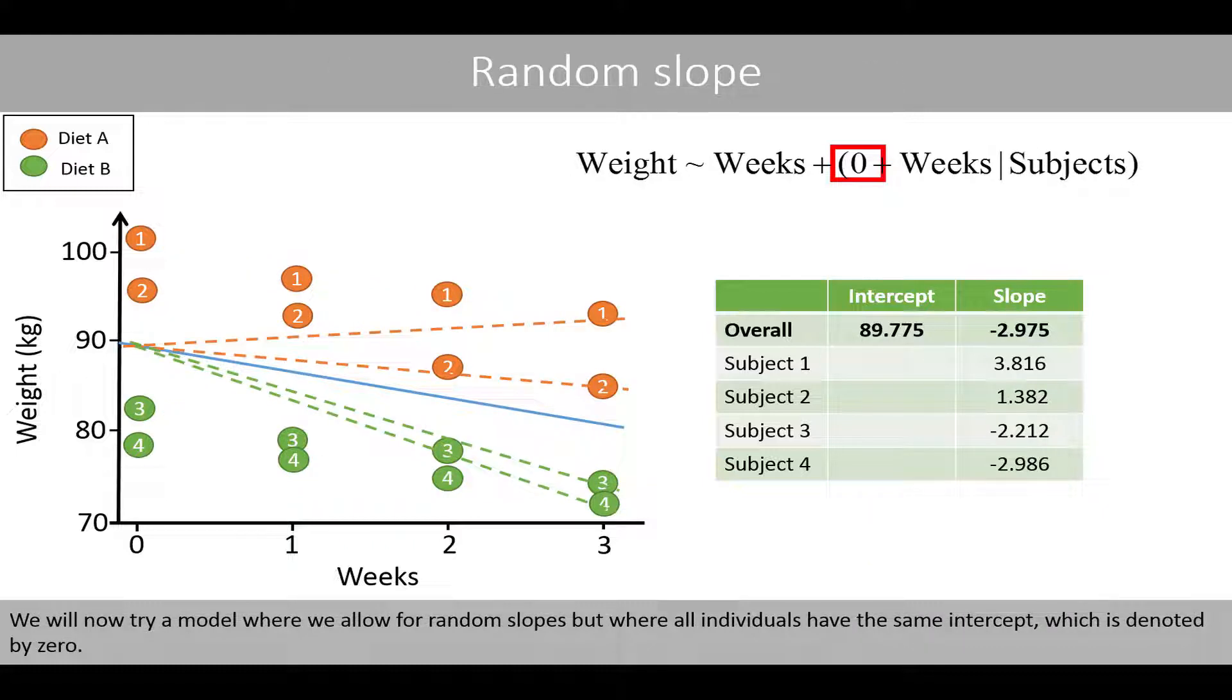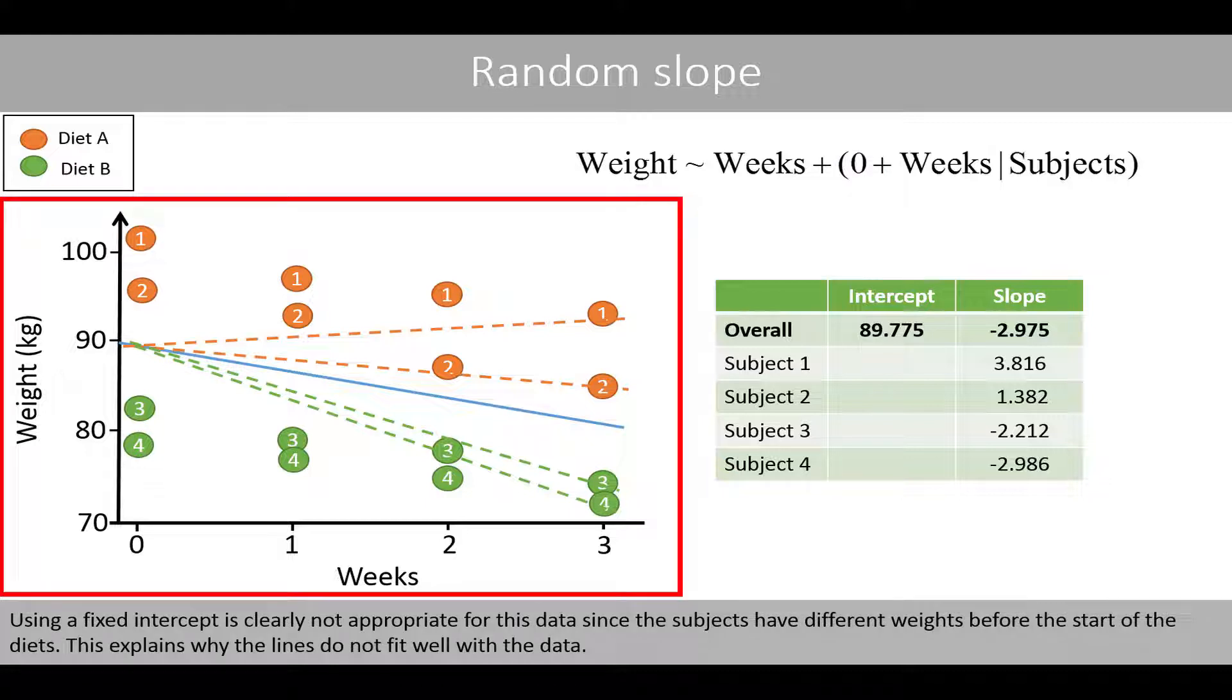We'll now try a model where we allow for random slopes, but where all individuals have the same intercept, which is denoted by 0. Using a fixed intercept is clearly not appropriate for this data, since the subjects have different weights before starting their diet. This explains why the lines do not fit well with the data.